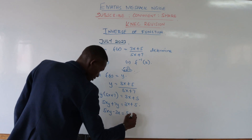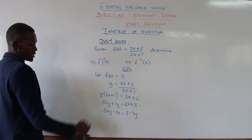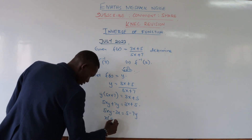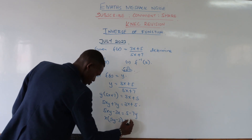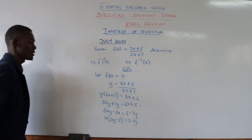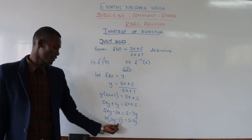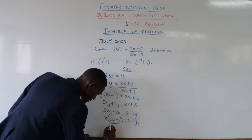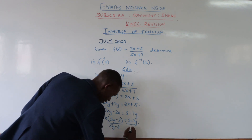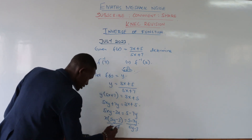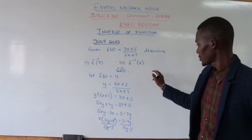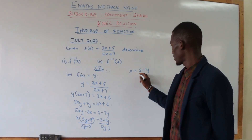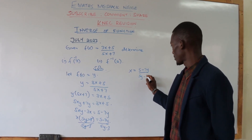The 3x comes to this side and the 5 goes to the other side, becoming negative 7y. We remove x as a common factor from both terms. So inside we remain with x times 5y minus 3 equals 5 minus 7y. Now we want to remain with x on this side, so we divide all through by 5y minus 3. Dividing through by 5y minus 3, we get x equals 5 minus 7y, all over 5y minus 3.